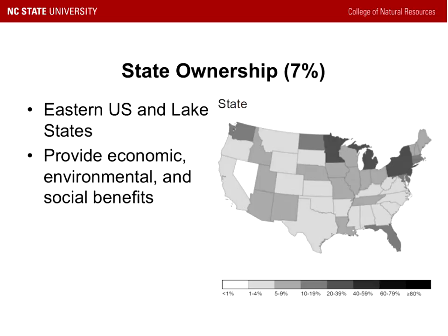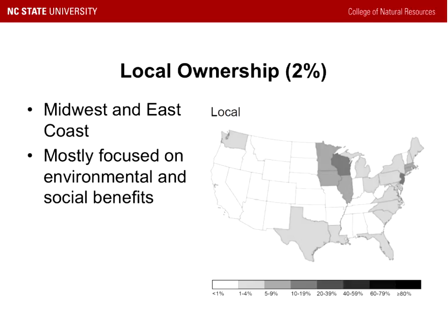The federal government isn't the only entity that owns public land. State governments own about 7% of the public land in the U.S., with the majority occurring in the eastern U.S. — particularly around the lake states. Local ownership, such as county and municipal governments, is also concentrated heavily in the lake states, midwest, and northeast. A lot of that land has been set aside for environmental and social benefits of local municipalities.